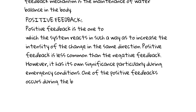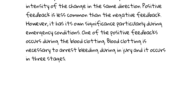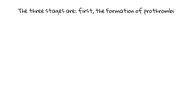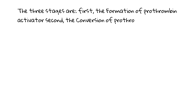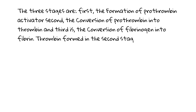One example of positive feedback occurs during blood clotting. Blood clotting is necessary to arrest bleeding during injury and it occurs in three stages. The three stages are: first, the formation of prothrombin activator; second, the conversion of prothrombin into thrombin; and third, the conversion of fibrinogen into fibrin.